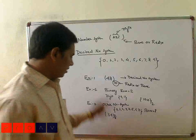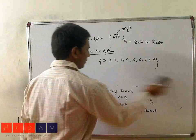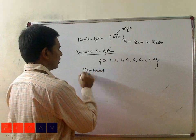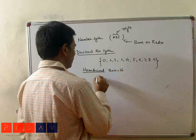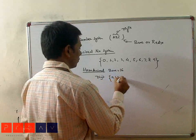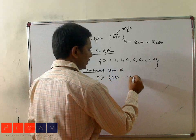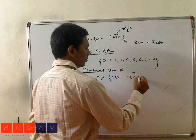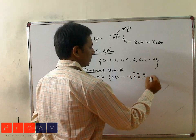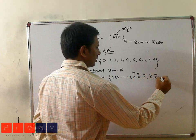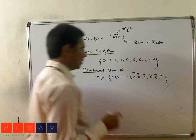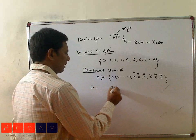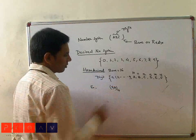Similarly, for hexadecimal, the base is 16 and the digits are 0 to 15. For hexadecimal with base 16, the digits go 0, 1, 2, up to 9, and for 10 the digit is represented by A. This is a special notation for the hexadecimal number system: A is 10, B is 11, C is 12, D is 13, E is 14, and F is 15. These are the digits used in the hexadecimal number system. For example, 9A with base 16 is called a hexadecimal number.